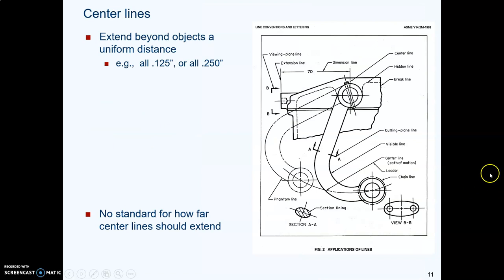Center lines must extend a little bit beyond whatever object they're attached to. There is no ASME standard for how far those center lines have to extend. The main thing that ASME says about it is just to make them extend a uniform distance, whatever distance you choose. You might choose to have them stick out an eighth of an inch or a quarter of an inch, but it is up to you. The main thing is don't stop your center line at the edge of a part. Have the center line stick out a little bit so we know that it's a center line.